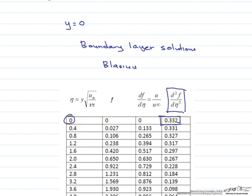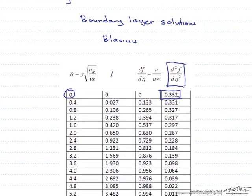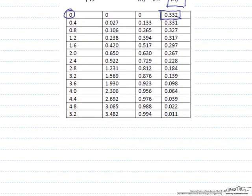So let's put this all together with our definition for our shear stress. Again, tau sub s is equal to mu du dy, which equals 0.332, that's our d squared f d eta squared, times u infinity times mu or viscosity times the square root of u infinity divided by nu times x.